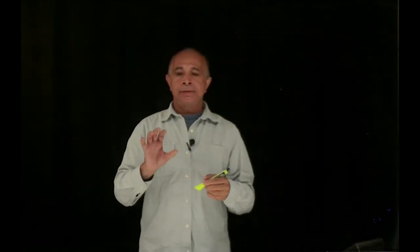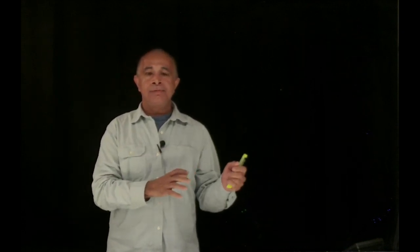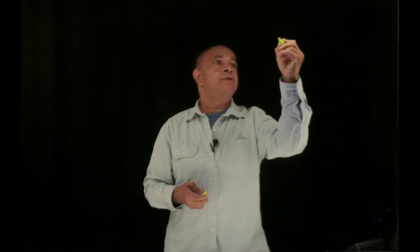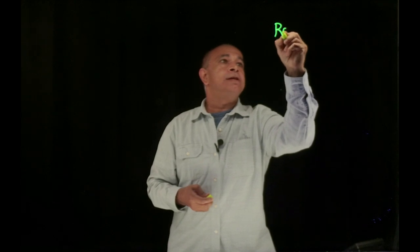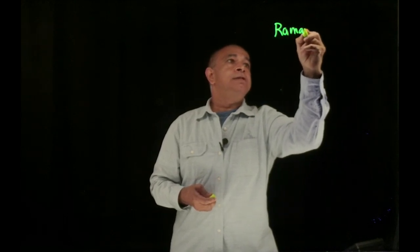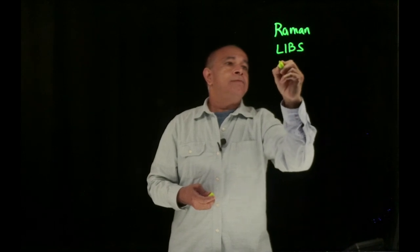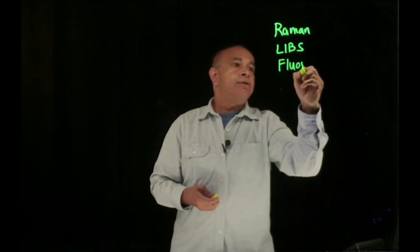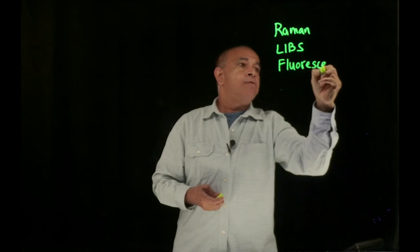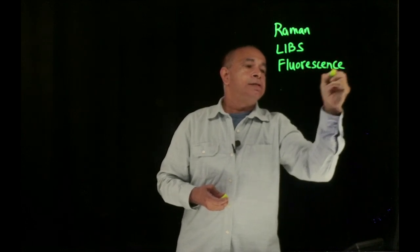We are making the sensor part of the Invader project where this instrument will measure what kind of chemicals are coming out of the chimneys. Three things we are focusing on is to measure the Raman signal, LIBS, and fluorescence. Later Tyro will talk about what these signals are.